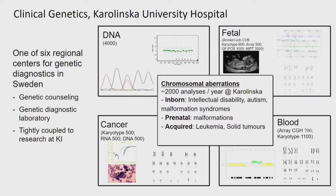When it comes to chromosome analyses, we do about 2,000 analyses each year, both from children with intellectual disability, syndromes, or autism, and we have prenatal samples with malformations, and we have cancer samples, both leukemia samples and solid tumors. I'm going to give you a short introduction into what we're working on and the methods we're using. Instead of massive numbers of samples, I will give you individual cases where we really try to use short- and long-read sequencing technology to understand the rearrangements — both how they occurred, but also how they cause disease.